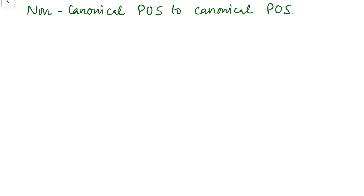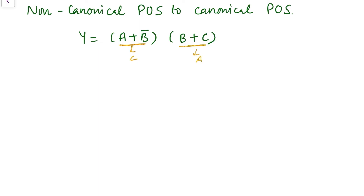Let's say we have the expression Y = (A + B')(B + C). In the first term, variable C is missing; in the second term, variable A is missing. Now, if we add 0 to a sum term, that will not change the expression. So in place of 0, we can write the missing variable ANDed with its complement, since A·A' is always 0. So we write: (A + B' + 0)·(0 + B + C).